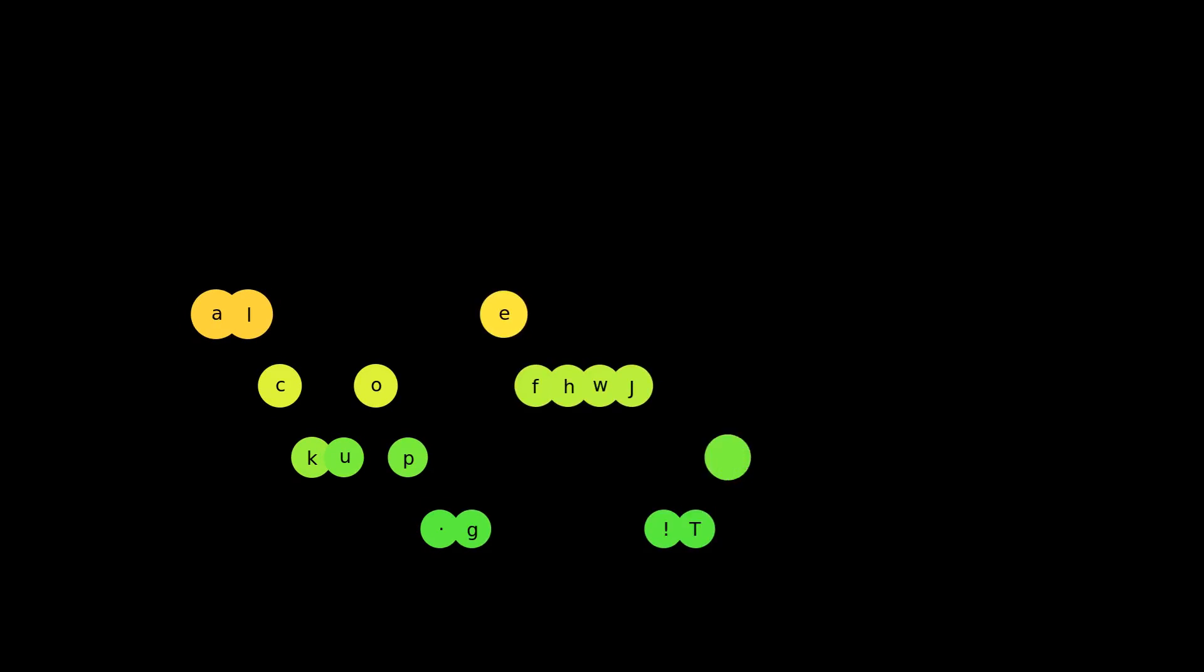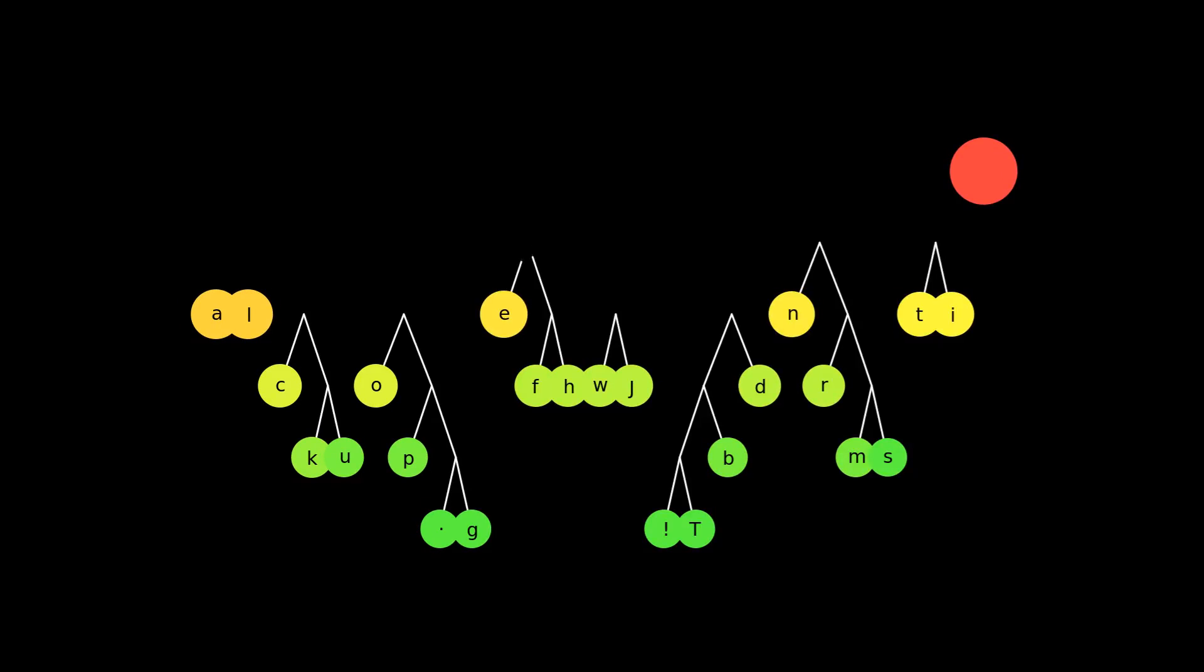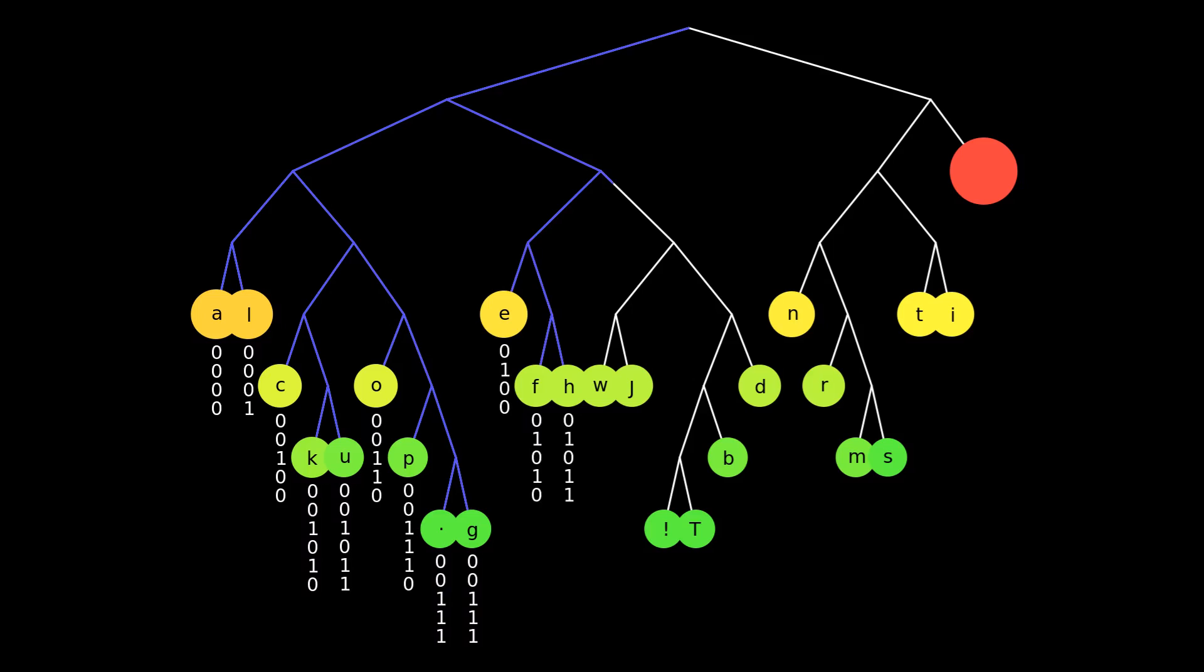Here's the whole process again for the nursery rhyme Jack and Jill. Again, you just progressively add the least frequent values and then read the tree backwards to create your code book.